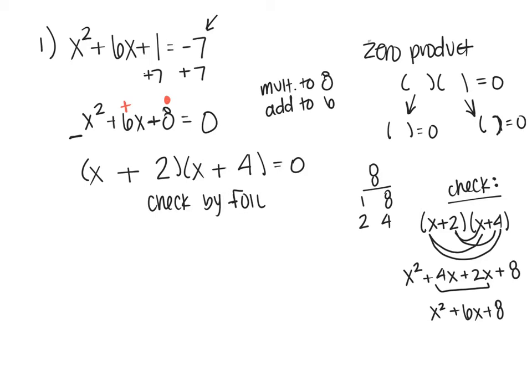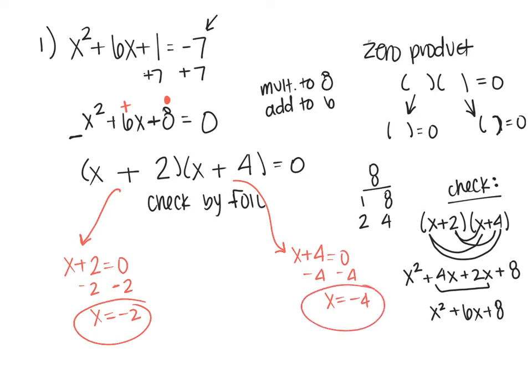Now that I've got that confirmed, I'm going to do my zero product property, which says take each piece and set it equal to zero. And then solve. Minus 2, minus 2, get x equals negative 2 is one of my answers. And minus 4, minus 4, x equals negative 4 is my other answer. So I have two solutions: x equals negative 2 and x equals negative 4. In Hawks, you would put those two with a comma between them.